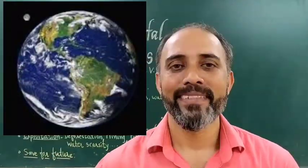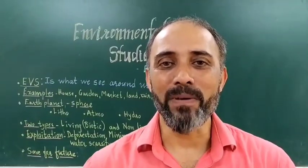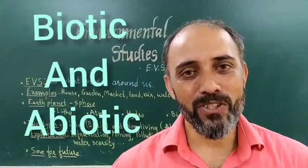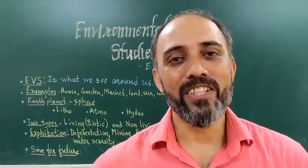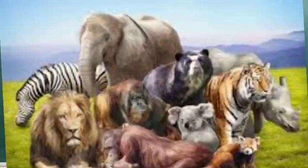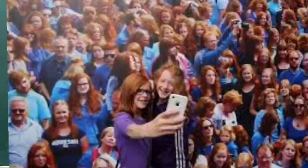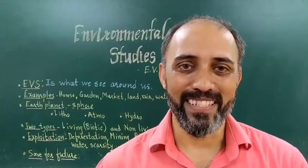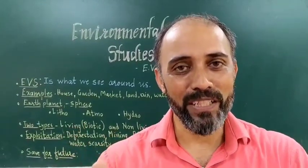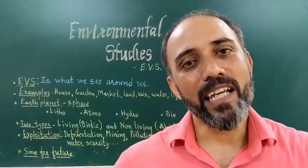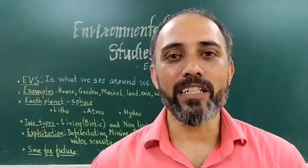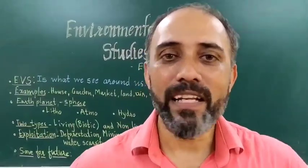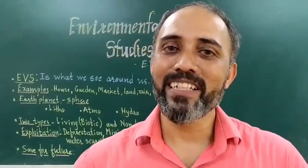The environment is divided into two parts: living things and non-living things. Living things are also called biotic, and non-living things are called abiotic. Biotic things have life — for example, you, me, animals, pets like dogs and cats, cattle, plants, birds. Abiotic things have no life — like your shirt, cloth, toothpaste, brush, TV, and benches.